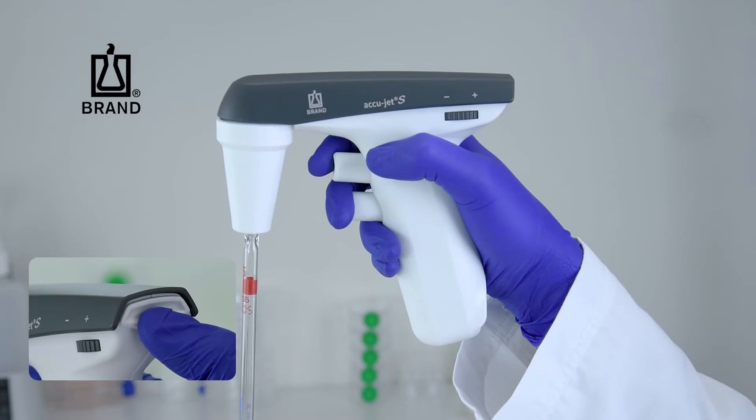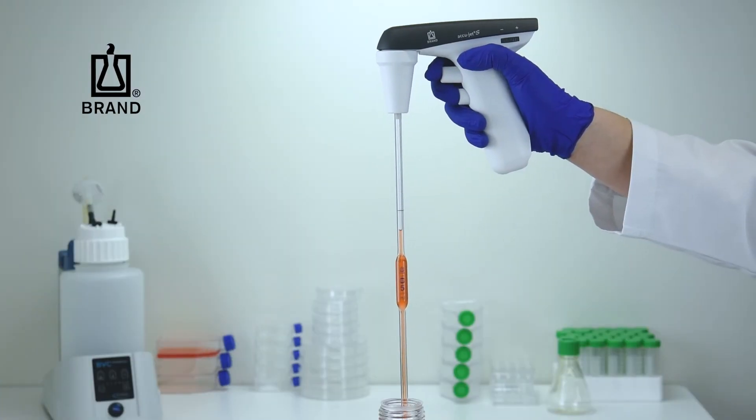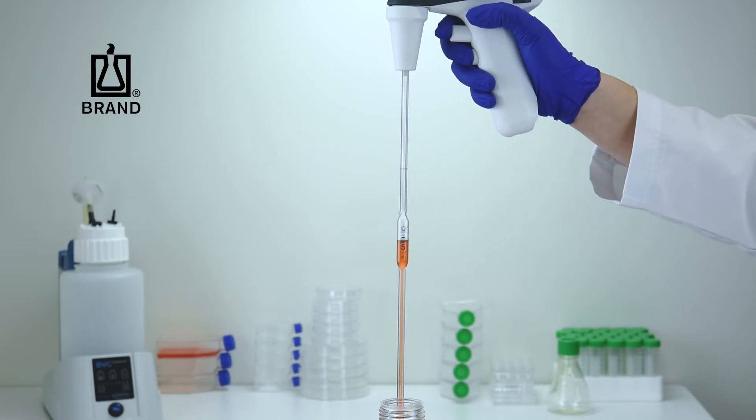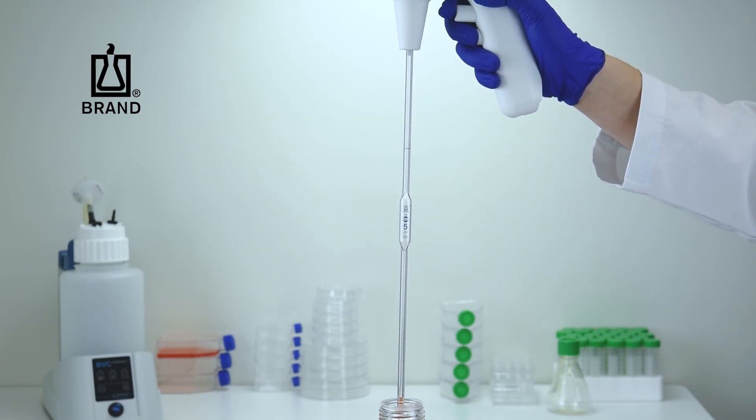With the AccuJet S set to Blowout mode, pressing the lower pipetting button will engage the motor. The AccuJet S responds dynamically to your touch. The more the lower pipetting button is depressed, the faster the fluid will dispense.